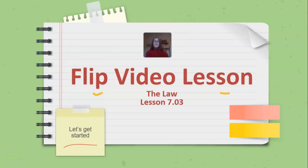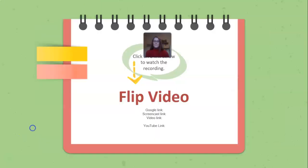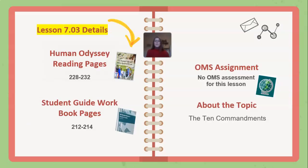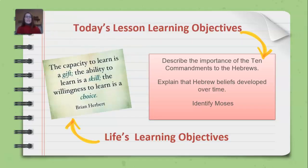Hello and welcome to our flipped video lesson for Lesson 7.03: The Law. Your Human Odyssey reading is pages 228 to 232, and your student guide workbook pages are 212 to 214. There is no OMS assessment for 7.03. Today's topic is the Ten Commandments. The lesson learning objectives are to describe the importance of the Ten Commandments to the Hebrews, explain that Hebrew beliefs developed over time, and identify Moses.